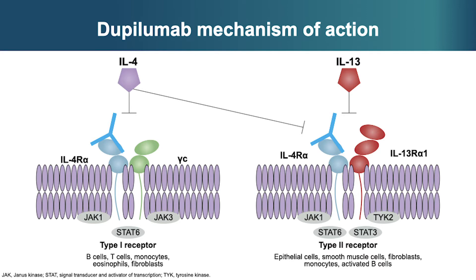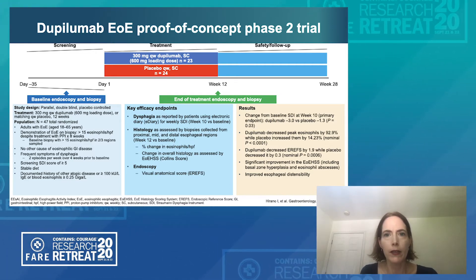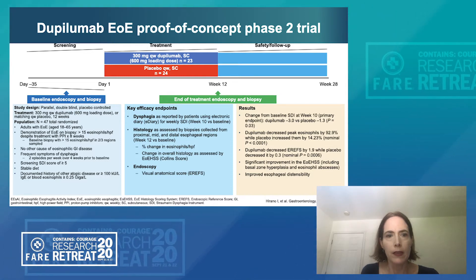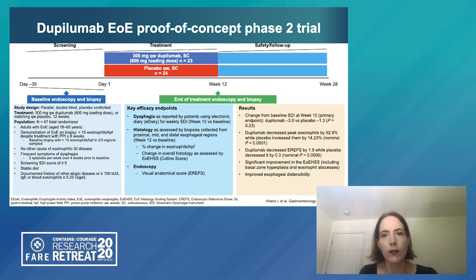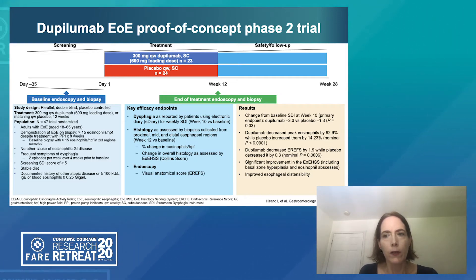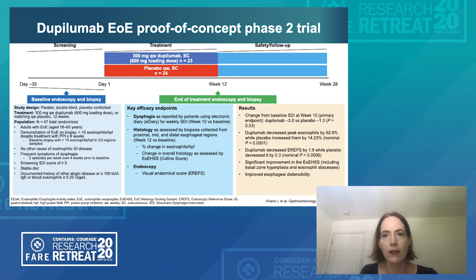Additionally, dupilumab has demonstrated both histologic and clinical efficacy in a phase 2 trial in adults with eosinophilic esophagitis. This was a multicenter trial in adult patients with eosinophilic esophagitis. Patients were randomized to receive dupilumab or placebo. These were adult patients who were non-responsive to PPIs, diagnosed in accordance with consensus guidelines, with active esophageal inflammation evident at screening.